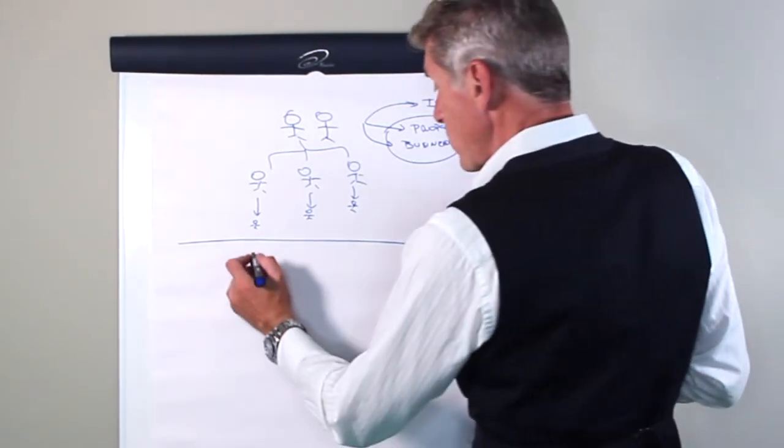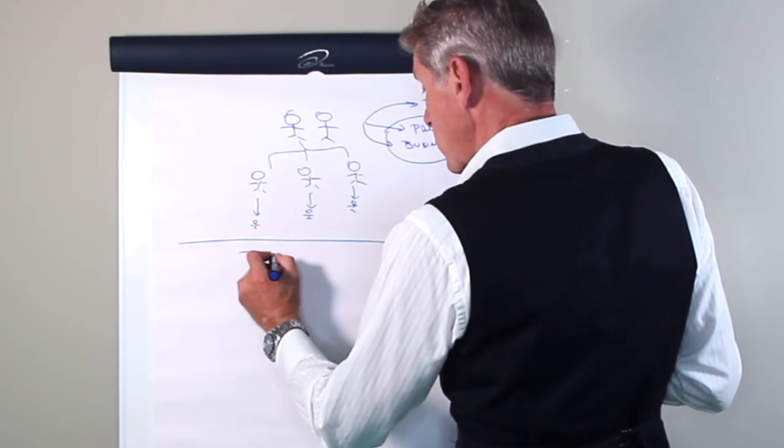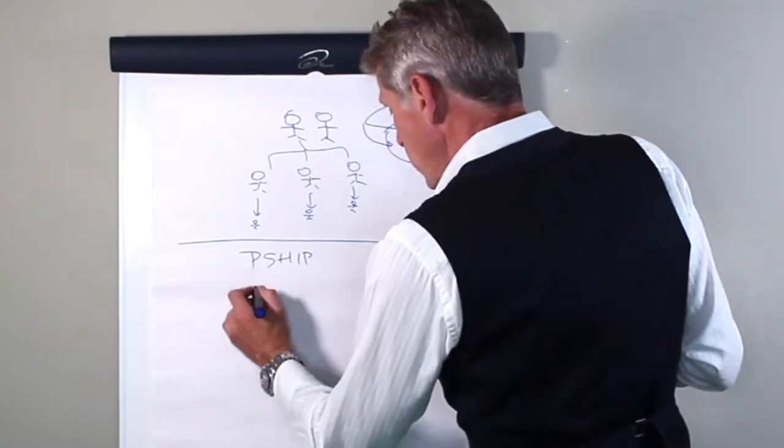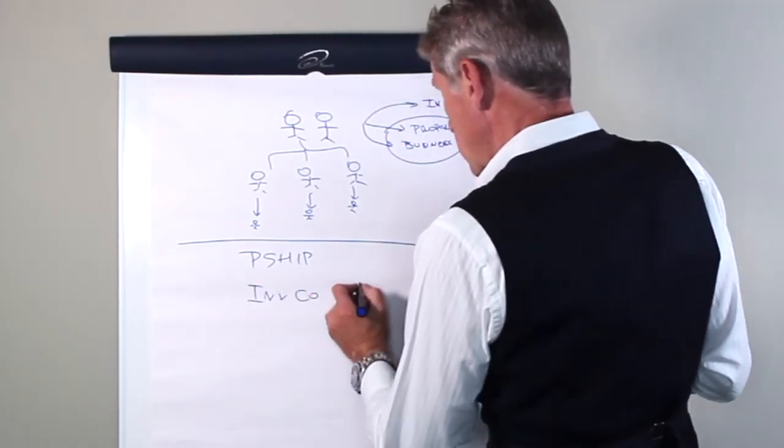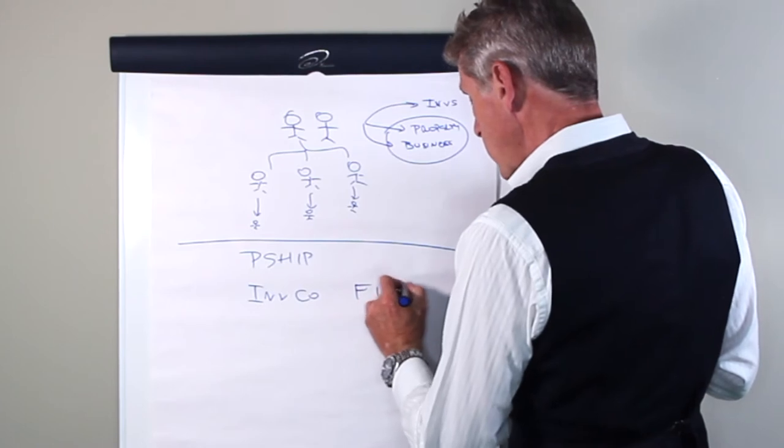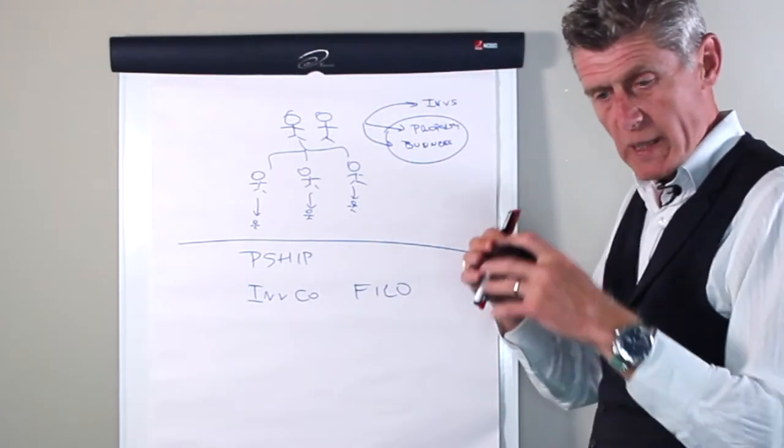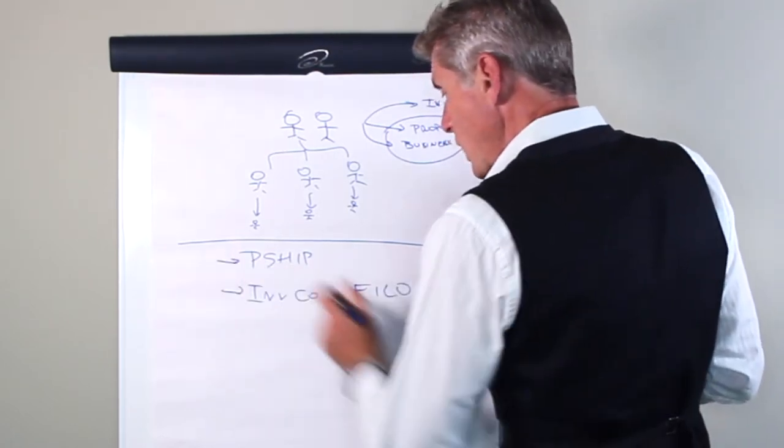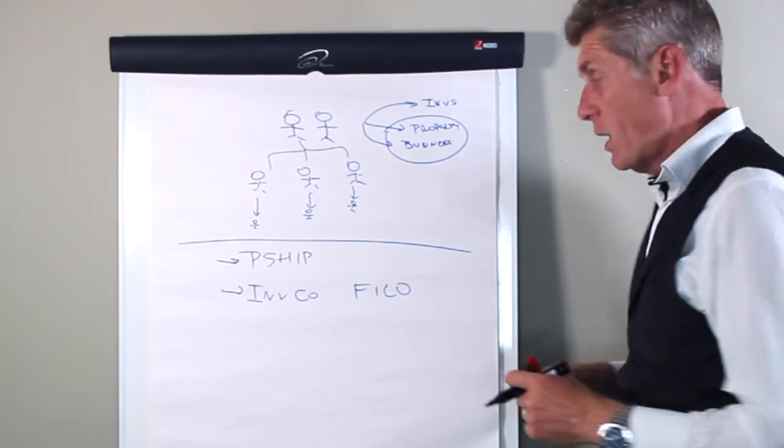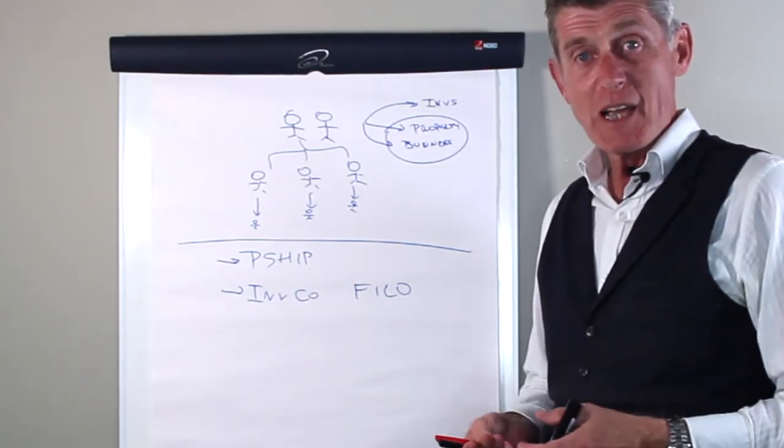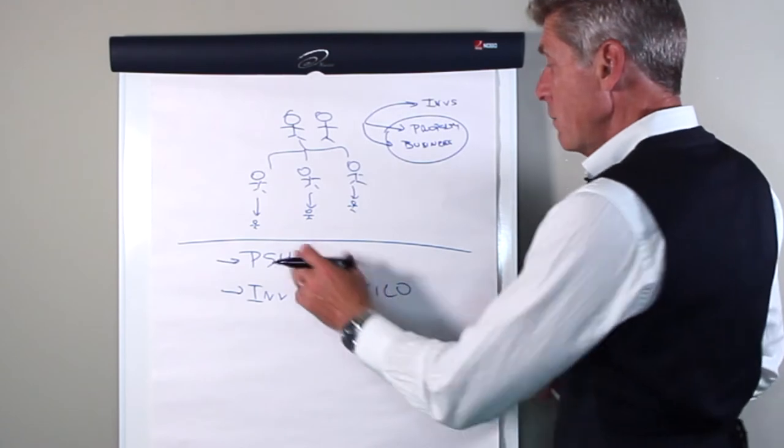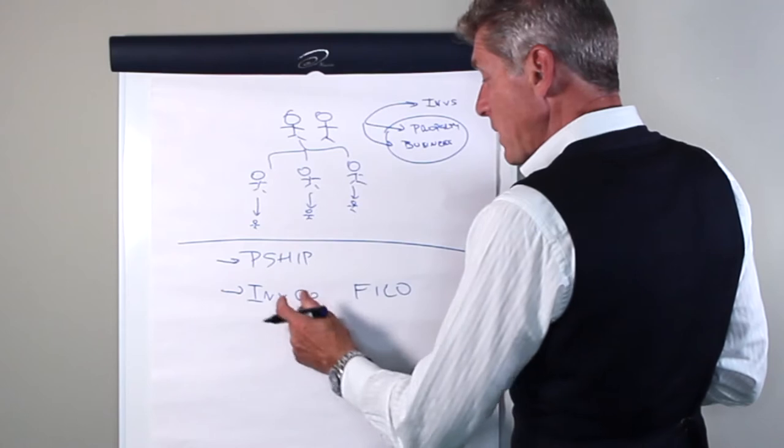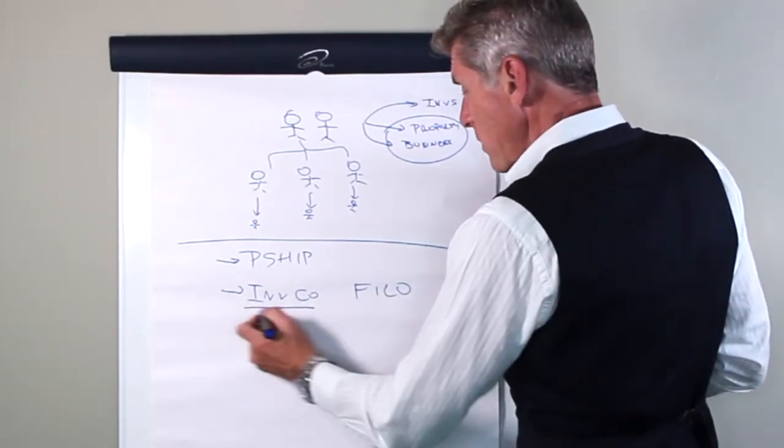Ironically, the easiest of them is a family partnership. You might have heard of the phrase family investment company, sometimes referred to as a FICO, and that's just a limited company that serves to exist and manage the family's wealth. The advantages of an investment company over a partnership are simply investment companies pay tax at corporation tax rates, generally lower. Partnerships pay income tax rates, generally higher.